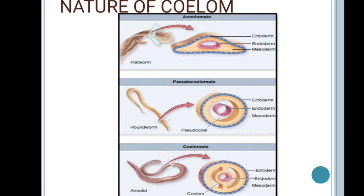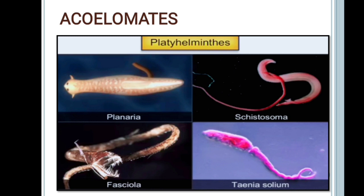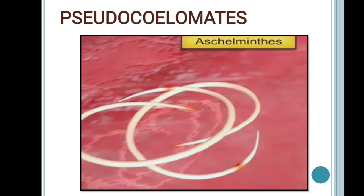The fourth important feature by which animals are classified is the nature of the coelom. The coelom is the body cavity lined by the mesoderm, and the presence or absence of this cavity helps to classify animals. There are three categories: coelomate, acoelomate, and pseudocoelomate. Coelomates are animals that possess a body cavity, such as annelids, mollusks, arthropods, echinoderms, hemichordates, and chordates. Acoelomates are animals in which a body cavity is absent, such as platyhelminthes. Pseudocoelomates are animals that possess a pseudocoelom, such as aschelminthes.